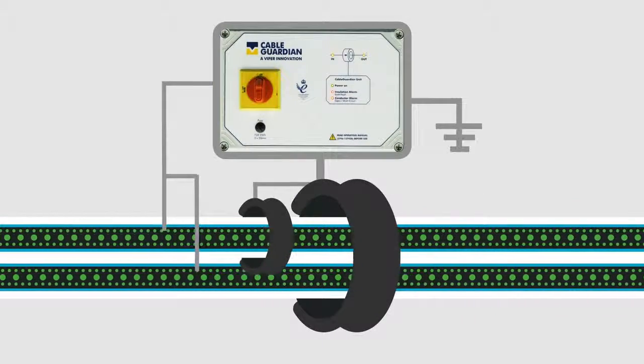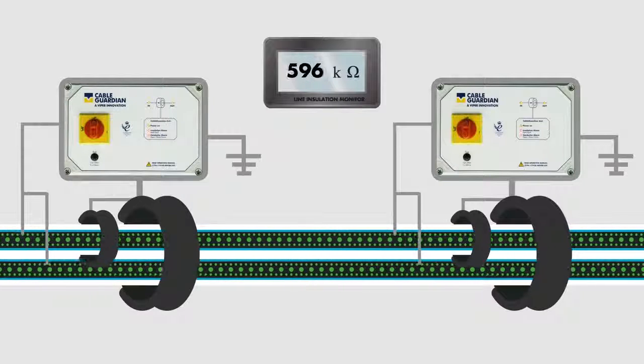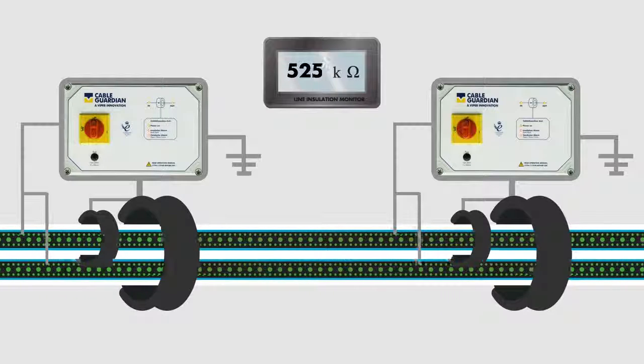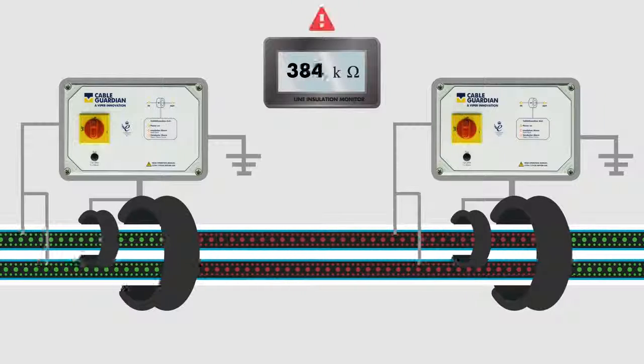If there is insulation damage or degradation, the system utilizes Viper's line integrity monitoring technology, proven over many years of service in the subsea oil and gas industry, to send an alert based on configurable alarm limits.